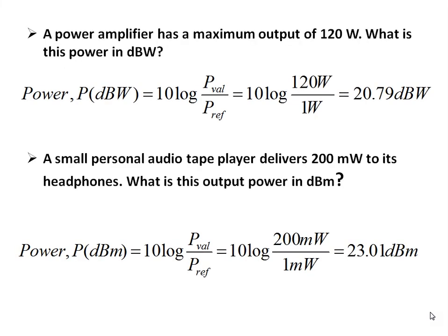These units can be understood by examples. A power amplifier has a maximum output of 120 watts. This power in dBW is 10 log of P value by P reference, where reference is one watt, giving 20.79 dBW. A small personal audio tape player delivers 200 milliwatts to headphones. In dBm with reference one milliwatt, this is around 23.01 dBm.